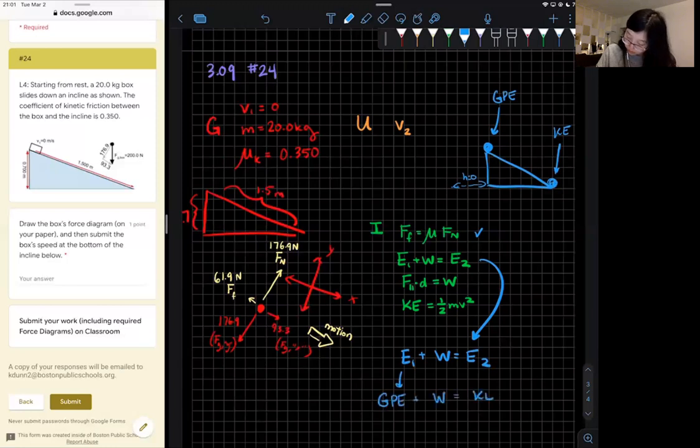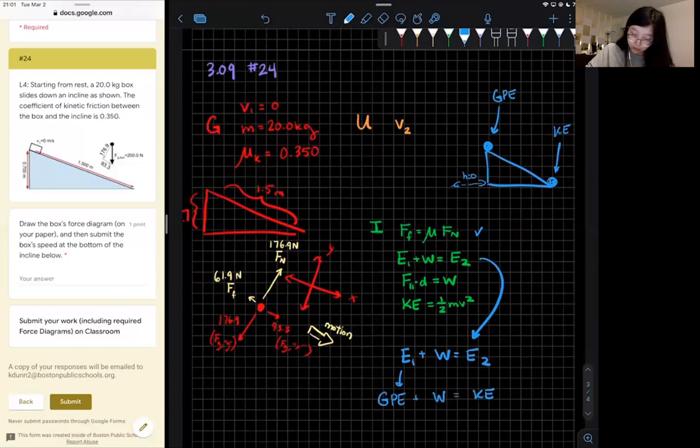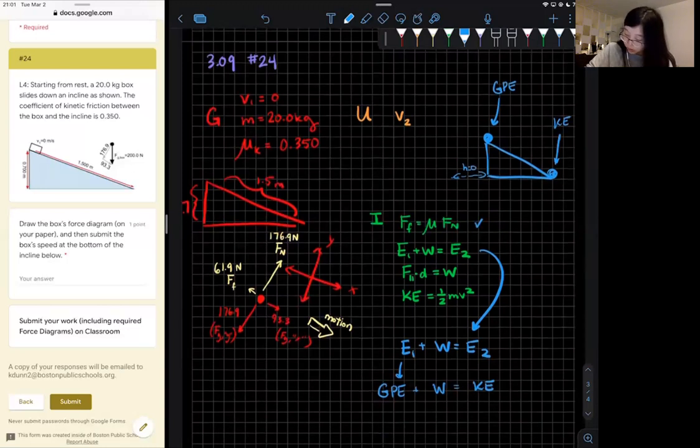So it might feel natural to write GPE plus work equals KE. This is a little different from how I did it in the other problem number 23, but this will work. It's just that you have to be careful that when you set everything up, you don't also count the work of gravity.